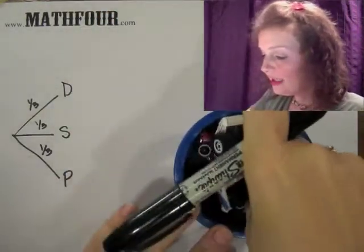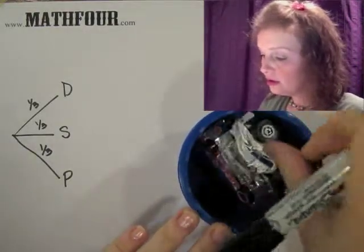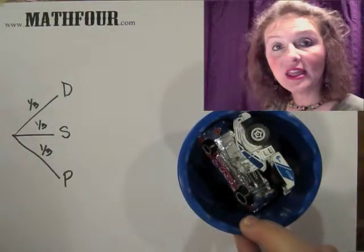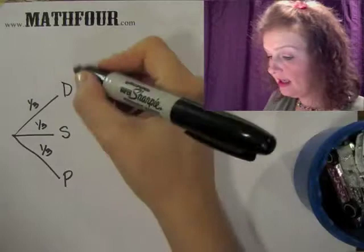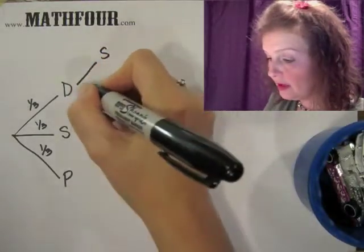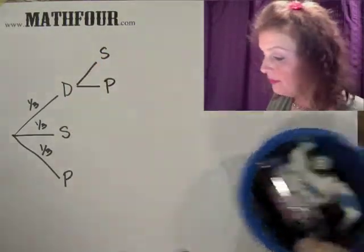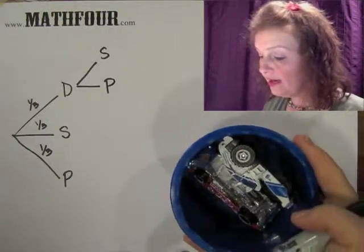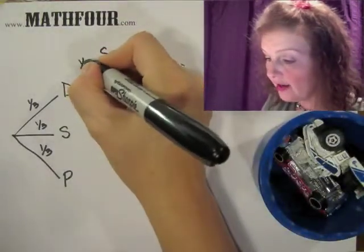Then once the DeLorean is out, I have two vehicles left in the bucket. And that is the steamroller and the pink car. Well, there's two in there, so I have a one in two chance of choosing each.